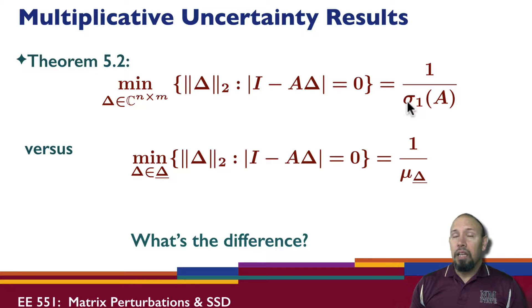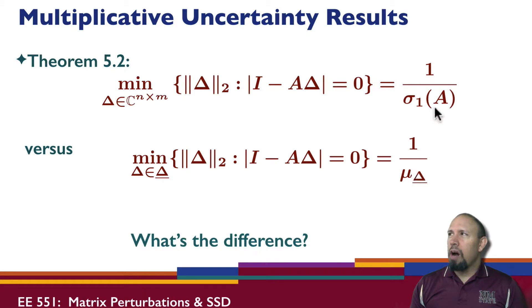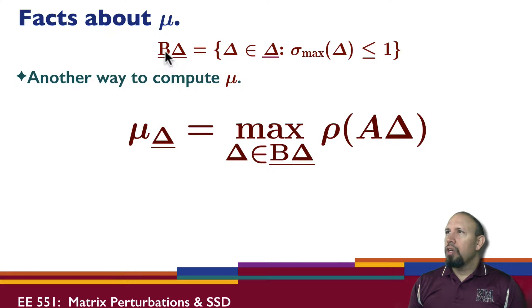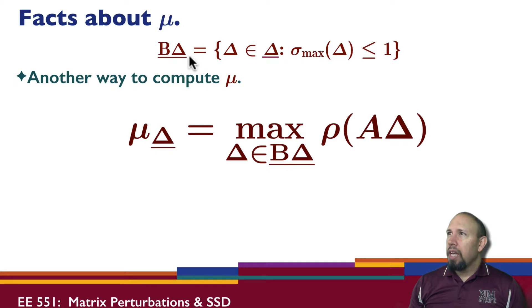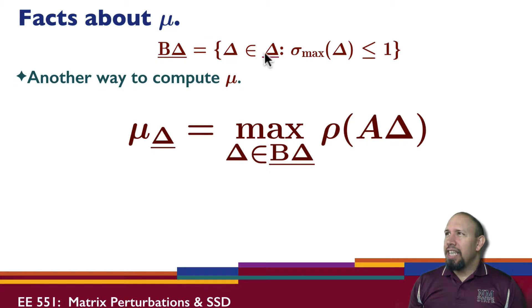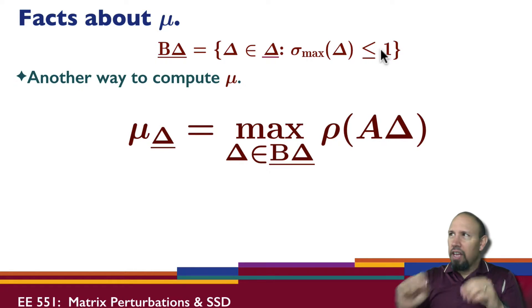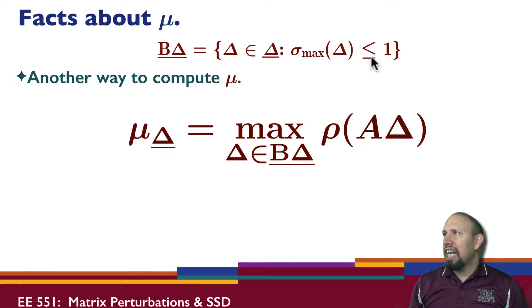One difference is that computing μ is a lot more complicated. We've already seen that computing singular values is more complicated than computing eigenvalues, but this is even more complicated. Let's look at some properties. I'm going to define B_Δ — the B here is referring to a ball. This is the set of deltas in the uncertainty set where the largest singular value of delta is less than or equal to one. If you think of σ_max as like a radius, this ball has radius less than or equal to one.